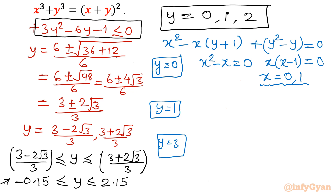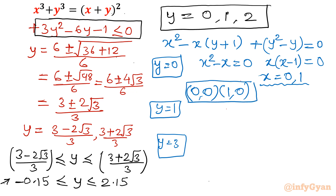So for y equals 0, the ordered pairs are (0, 0) and (1, 0). This is one set of solutions. Now for y equals 1, the equation becomes x² minus 2x plus 0 equals 0.